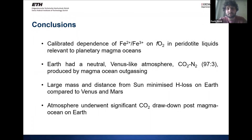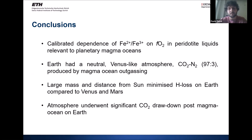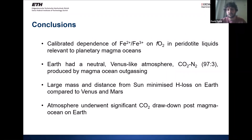In conclusion: we calibrated the dependence of the Fe³⁺/Fe²⁺ ratio on fO₂ in peridotite liquids as relevant to planetary magma oceans. From this, Earth probably had a neutral Venus-like atmosphere with a CO₂/N₂ ratio of approximately 97 to 3. It is the size of the Earth and its distance from the Sun that allowed it to retain water on its surface, which then facilitated the drawdown of such a CO₂ atmosphere post-magma-ocean on Earth. Thank you very much.